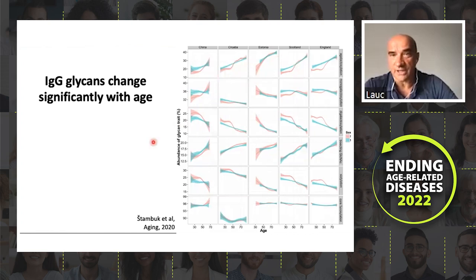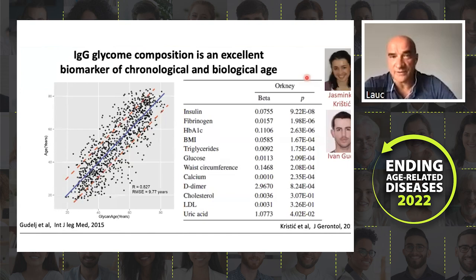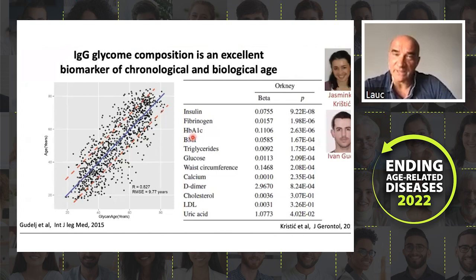This is a relatively recent paper showing five different population cohorts — blue are men, red are women — and with age, glycans change a lot. This enabled us to create the first glycan age clock of aging, published in late 2013. The most interesting thing about this clock was that the delta between glycan age and chronological age was explained by biomarkers known to be related to unhealthy lifestyle — things like high insulin, fibrinogen, HbA1c, BMI, and so on.